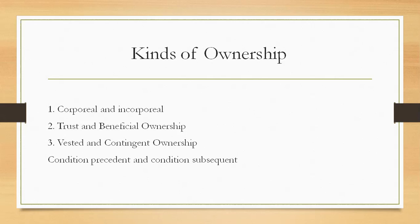The ownership of the trustee is in fact nominal and not real. In law, however, the trustee represents his beneficiary. Thus, if property is given to A on trust for B, A would be the trustee and B would be the beneficiary. A would be the legal owner of the property and B the beneficial owner. A would be under an obligation to use the property only for the benefit of B.